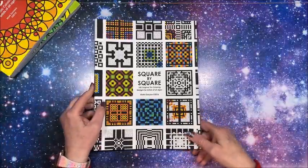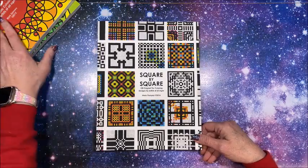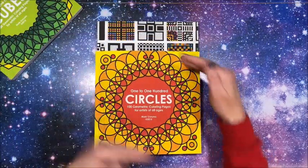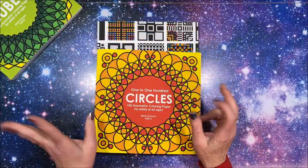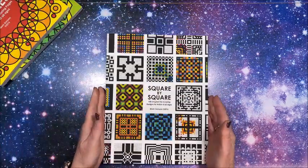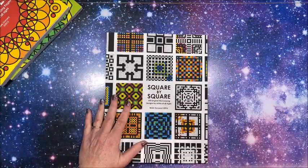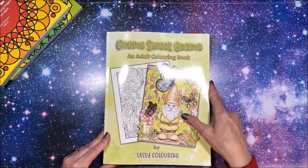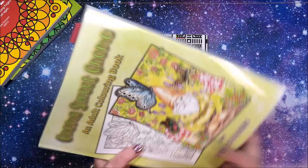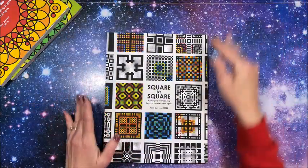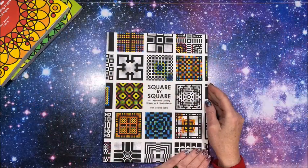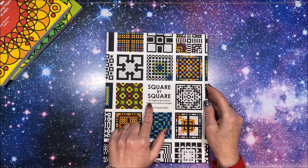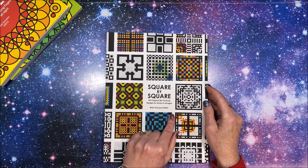Here we have Square by Square. These books are smaller size because they're more mandala-like. This one is a full size, eight and a half by 11. This is the same size as your standard.